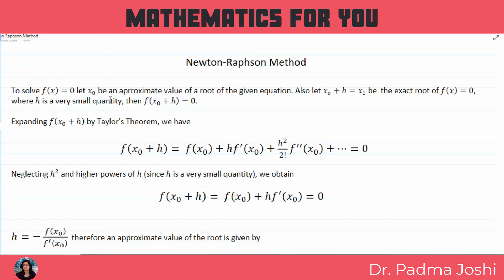Let x0 be an approximate value of a root of the given equation. Also, let x0 plus h is equal to x1 be the exact root of function of x is equal to 0, where h is very small quantity, then we can say that function of x0 plus h is equal to 0.